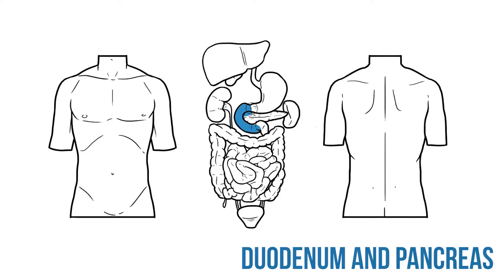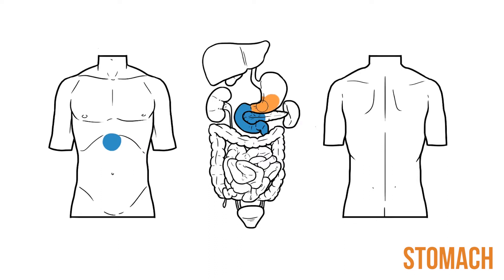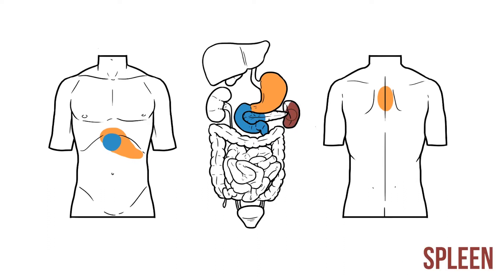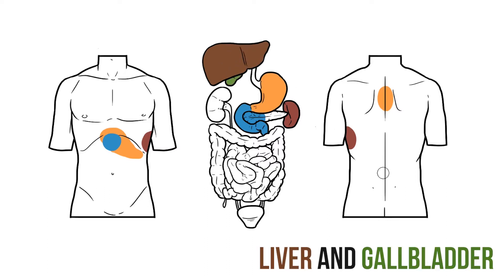Pain from the duodenum or the head of the pancreas tends to be felt in the midline, just below the ribcage. Stomach pain can be found around this area, extending to the left, but can also pass posteriorly between the shoulder blades. An injury to the spleen can present with pain on the left side of the abdominal wall. Meanwhile, pain on the right often relates to problems with the liver or gallbladder. These organs have a more extensive pattern of referred pain, converging on the midline anteriorly, and then diverging posteriorly.